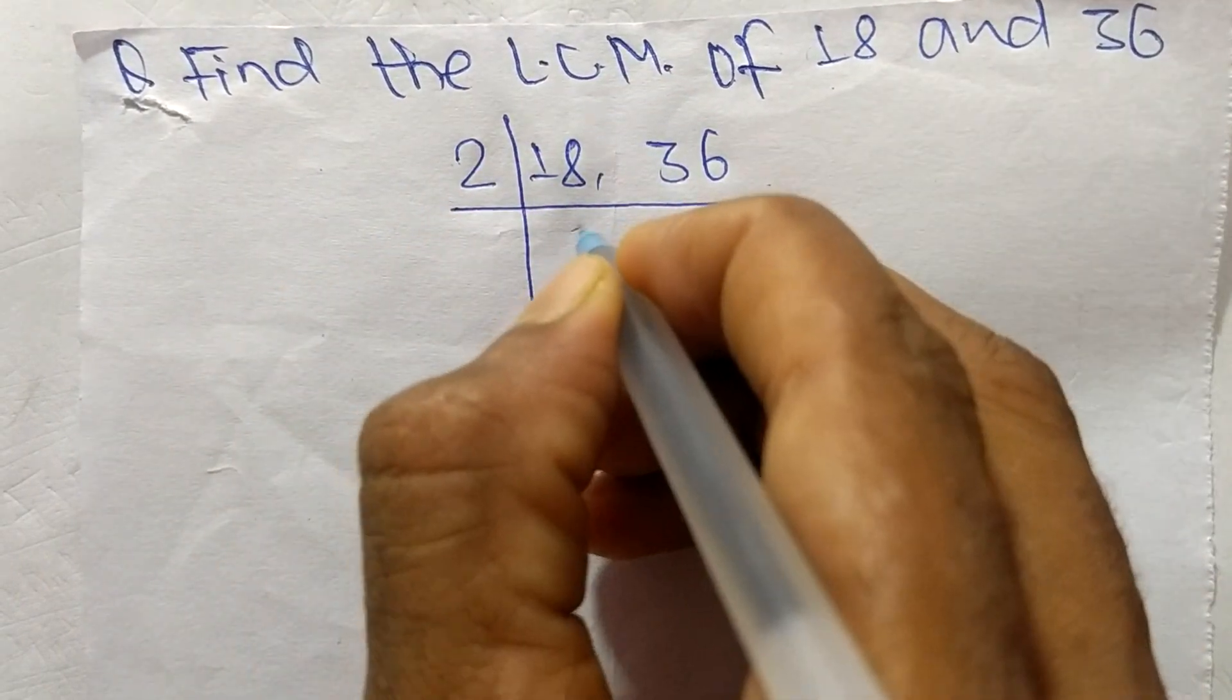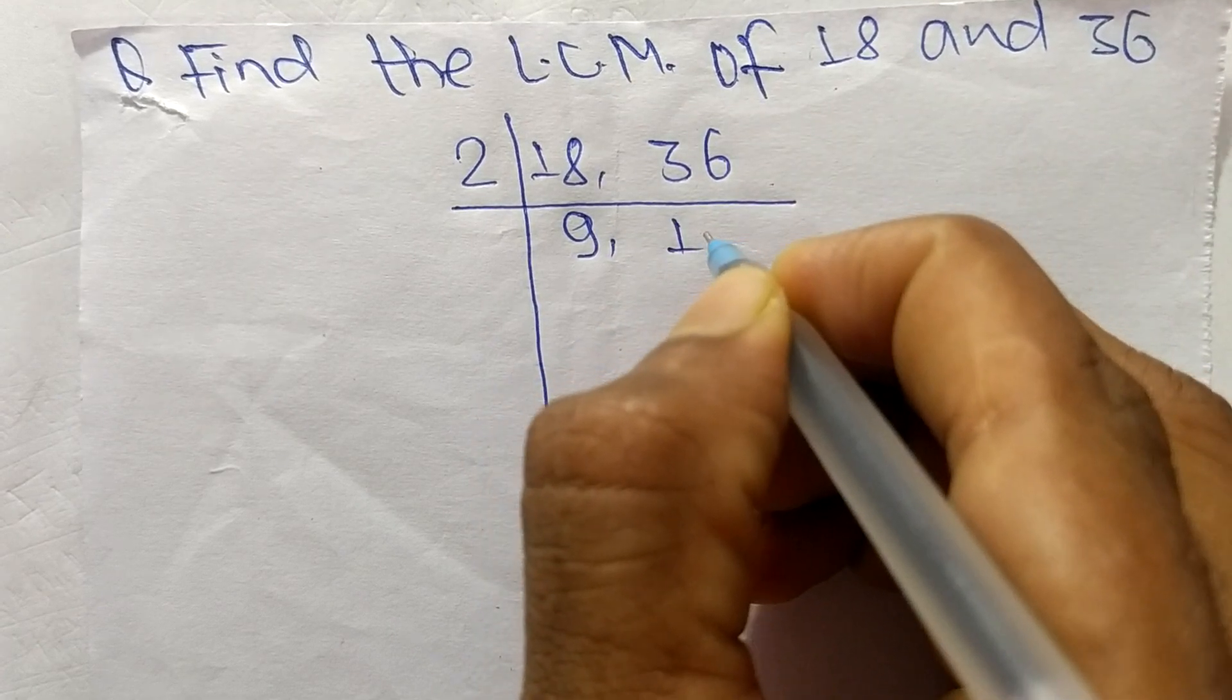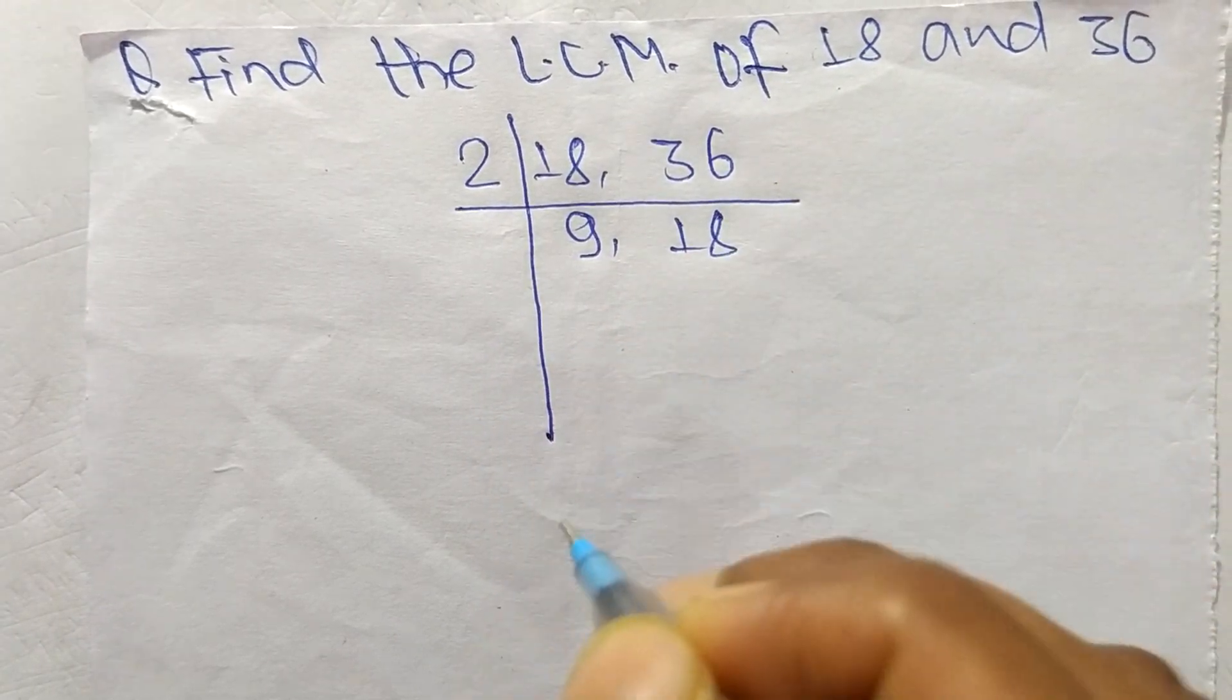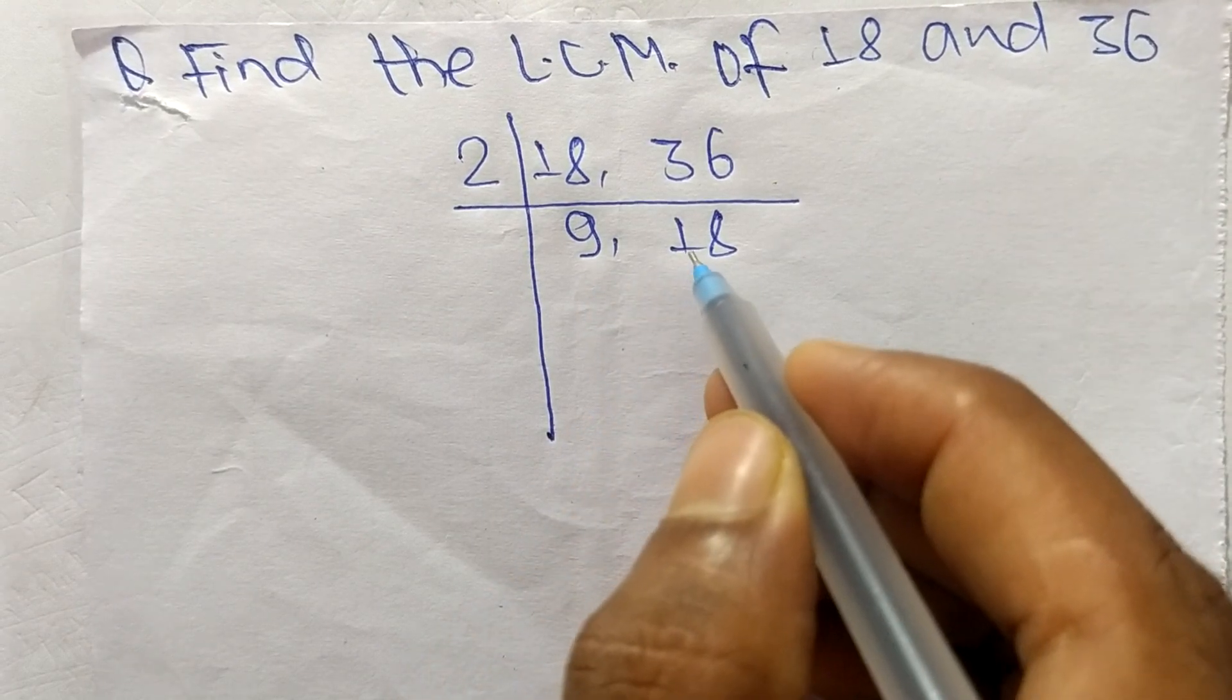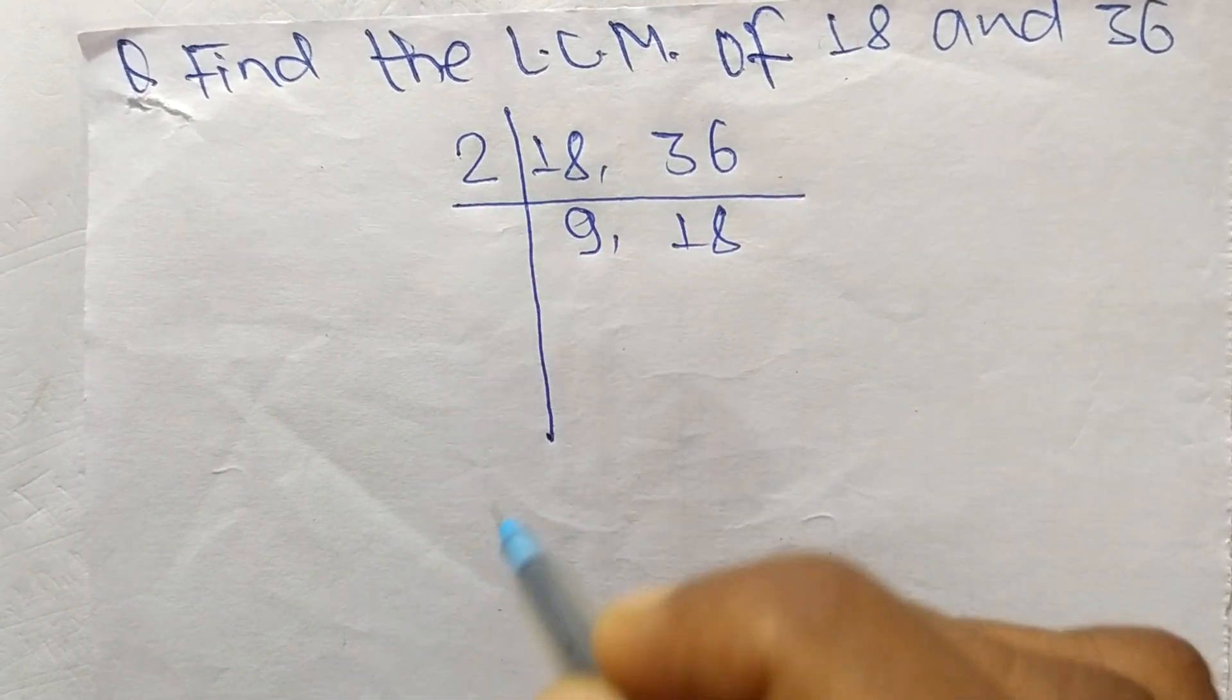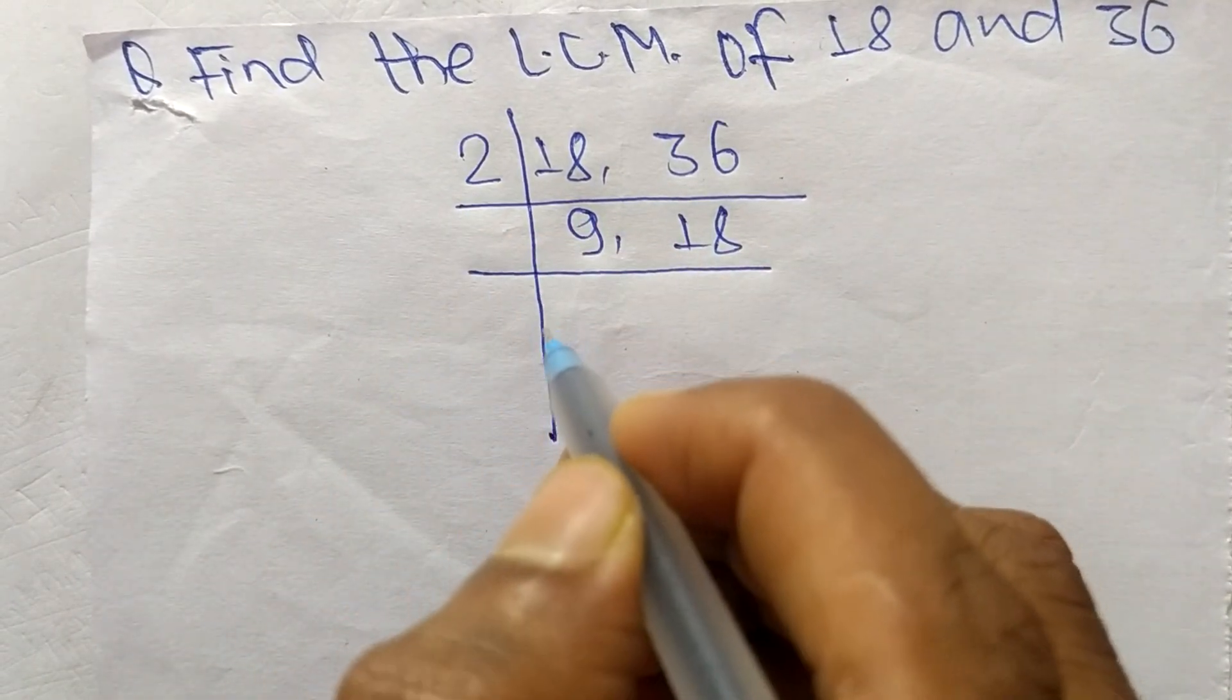The number is 2. So 2 times 9 means 18, and 2 times 18 means 36. Now we have 9 and 18, which are not exactly divisible by 2, so we choose the number greater than 2 that can exactly divide 9 and 18.